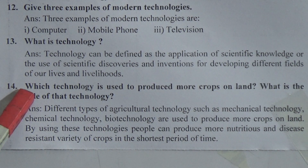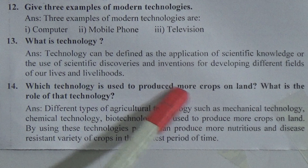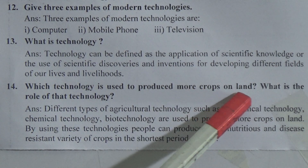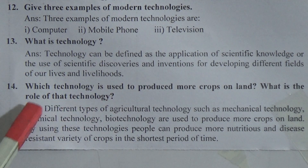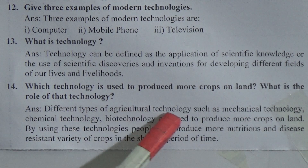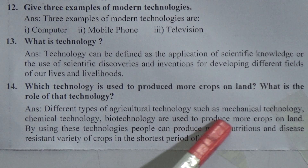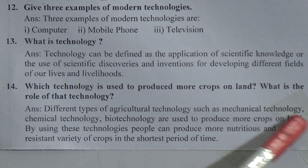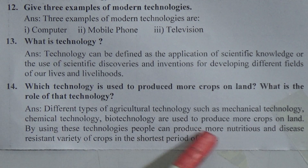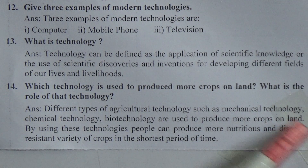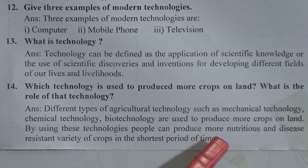Question 14: Whose technology is used to produce more crops on land, and what is the role of that technology? Answer: Different types of agricultural technology such as mechanical technology, chemical technology, and biotechnology are used to produce more crops on land. By using these technologies, people can produce more nutritious and disease-resistant varieties of crops in the shortest period of time.